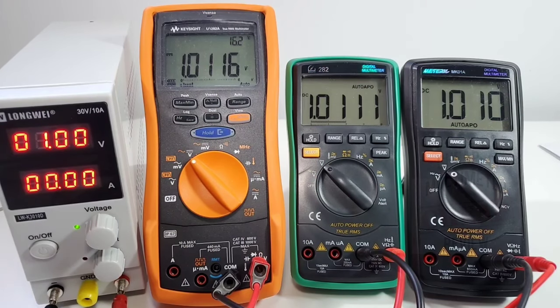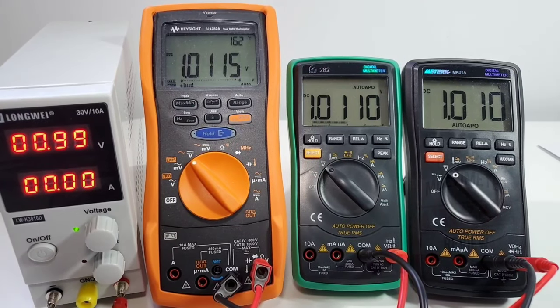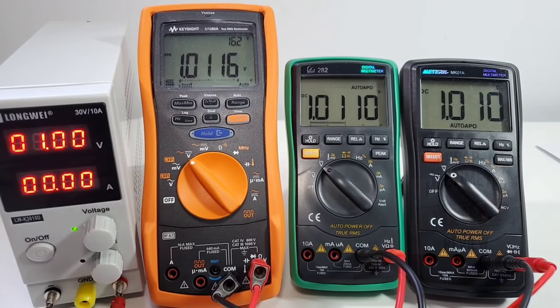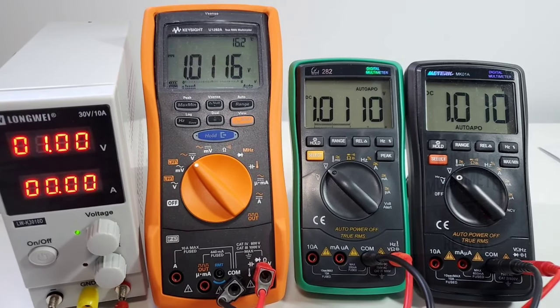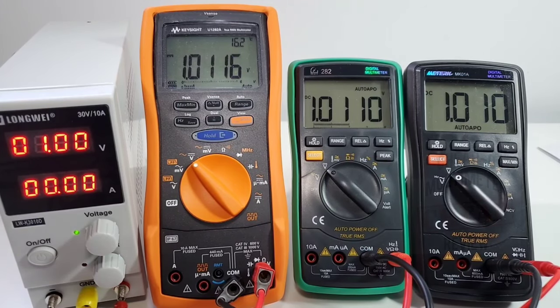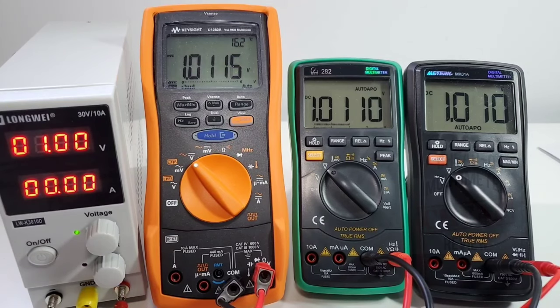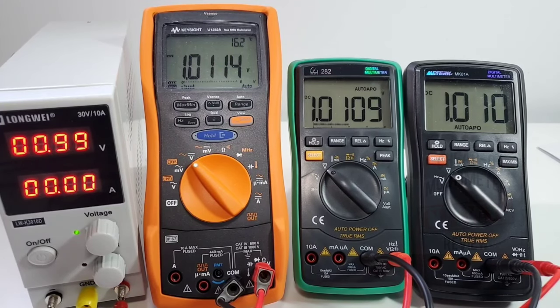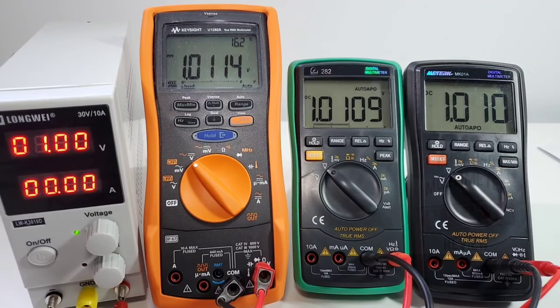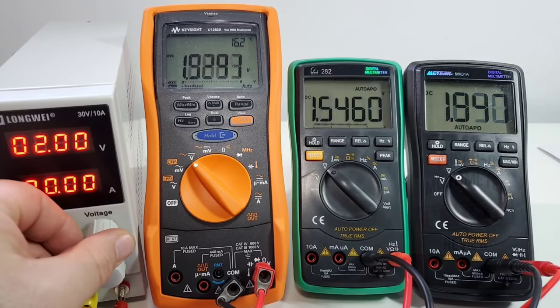DC voltage showdown. I've got the Keysight U1282A lined up with the Zeest 282 and the MeterK MK01A. Big shout out to Keysight—they graciously provided me this U1282A and I will be doing a review on that at the end of the summer. Here we are sitting now at 1 volt even according to the Longwei. We've got 1.0115 for that high 60,000 count resolution Keysight, 1.0109 for the 282, and 1.010 for the MK01A. All pretty well neck and neck.